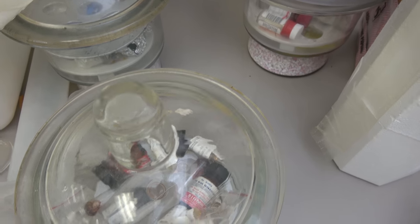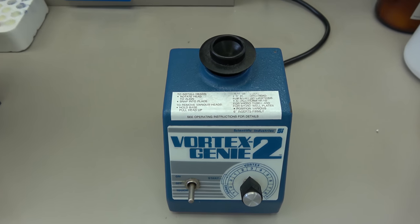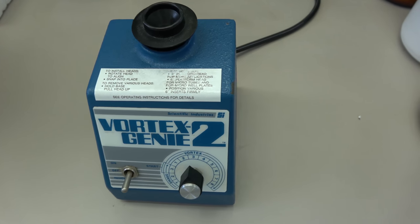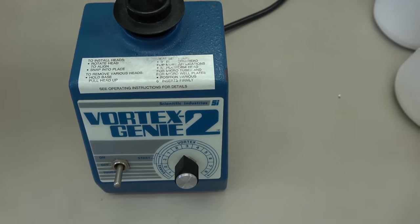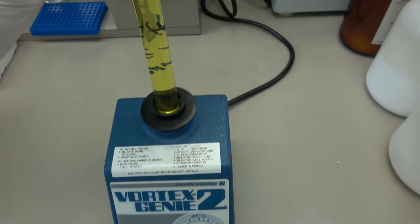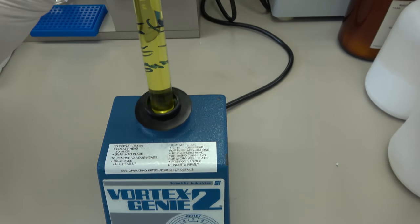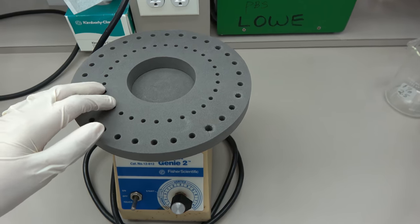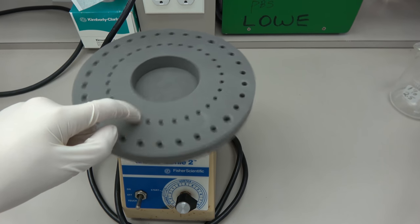If you see these weird doodads around. These are called desiccators. Long story short if you want to keep something dry you put it in here. Here we have a vortexer. This one's a vortex genie. So if you need to vortex something you just do that. Do some mixing. Someone put this here. But it's pretty fun to play with.